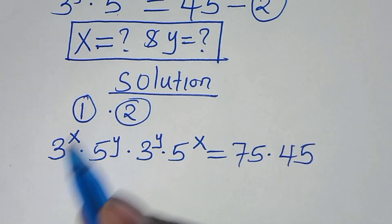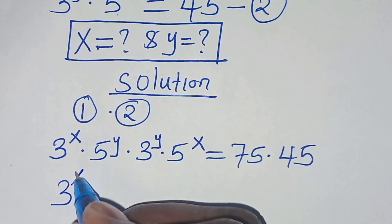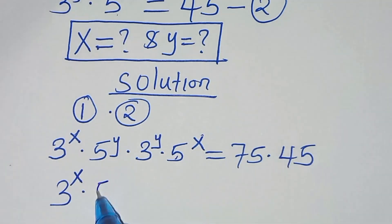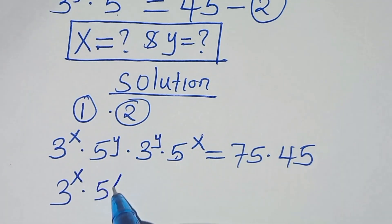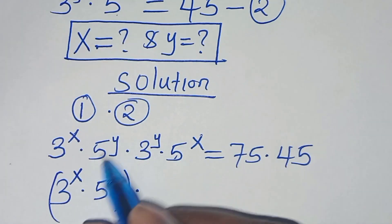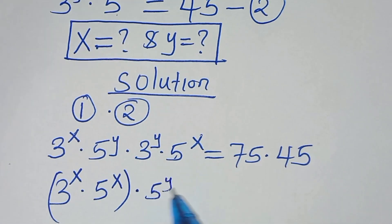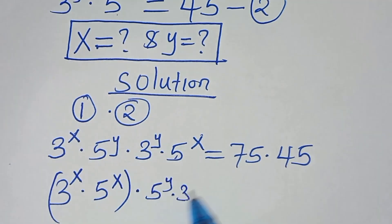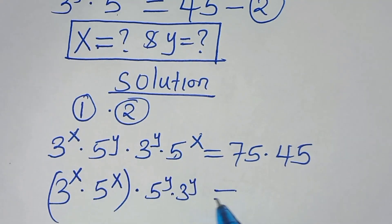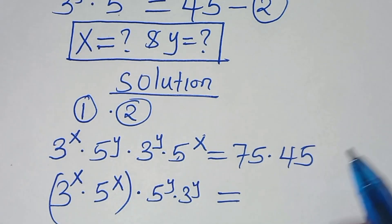So now we have 3 to the power of x times 5 to the power of x, multiplied by 5 to the power of y times 3 to the power of y, this is equal to 75 times 45, which equals 3375.